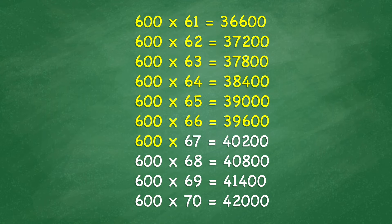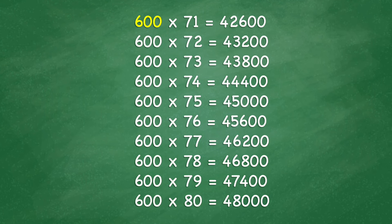600 x 67 equals 40,200. 600 x 68 equals 40,800. 600 x 69 equals 41,400. 600 x 70 equals 42,000. 600 x 71 equals 42,600.